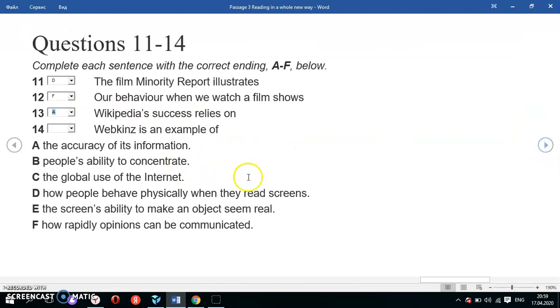Okay, we have only a few options left. We have B: people's ability to concentrate—not given. C: global use of the internet—not given. We have only option E left: the screen's ability to make an object seem real. That's the exact answer which I need, because it was said in the text that the Webkinz toys have a character—a virtual character on the screen—and children can play with this virtual character. So this is E: the screen's ability to make an object seem real.